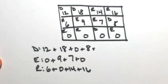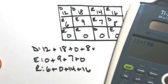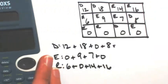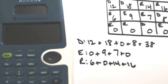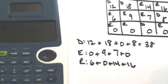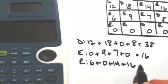So adding all this together, 12, 18, and 8 is 38. 9 and 7 is 16. 6, 14, and 16 is 36.